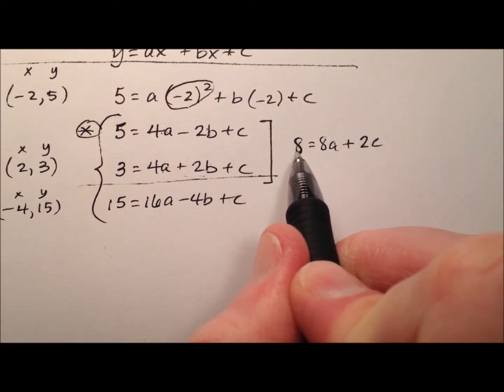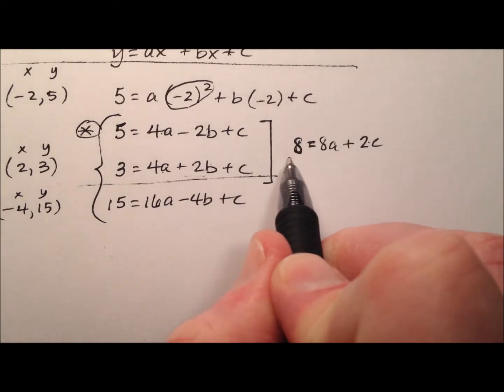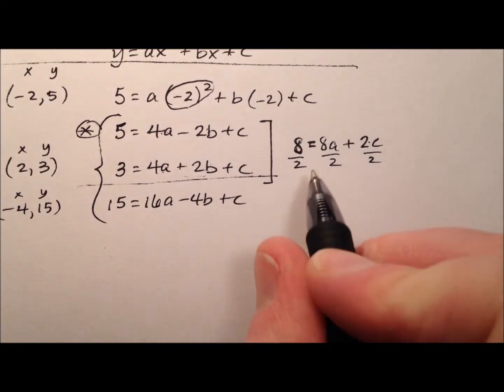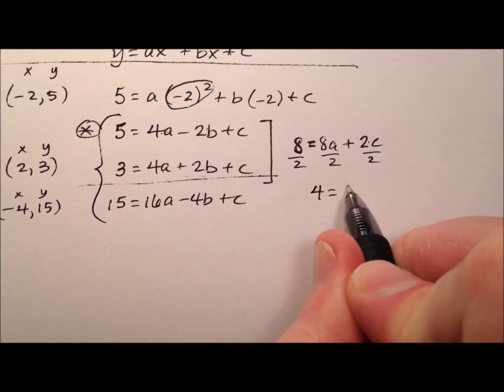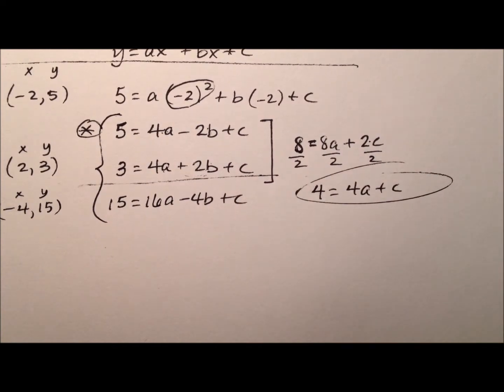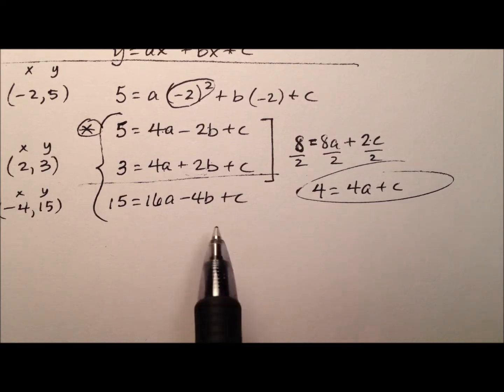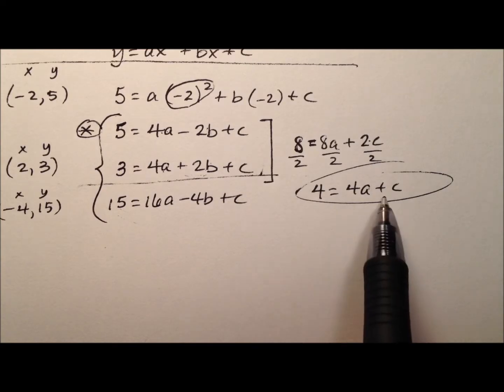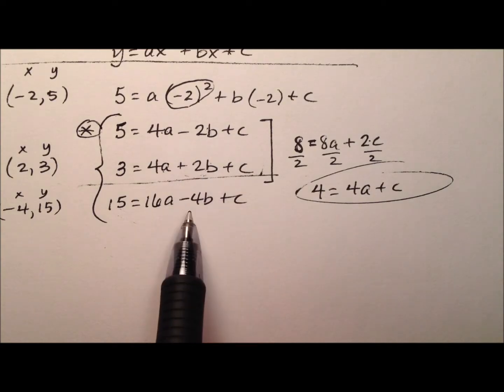At this point, we can see that we have 8, 8, and a 2, so we could just divide everything by 2 to make these numbers smaller. So we would end up with 4 equals 4a plus c. So there is one equation now, and we've eliminated the b's. So how else could we approach this system, since we're using elimination, to combine two of these equations together to eliminate the b's?